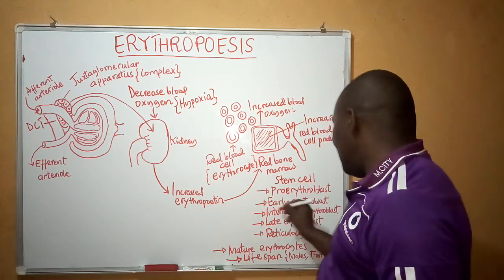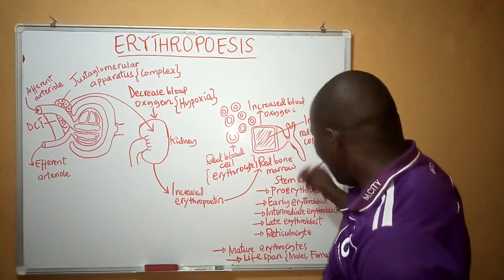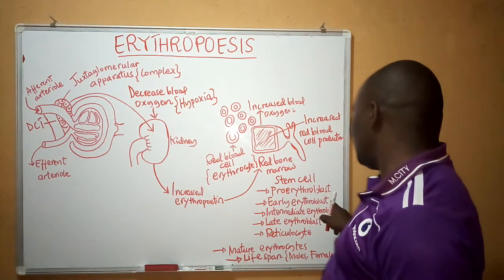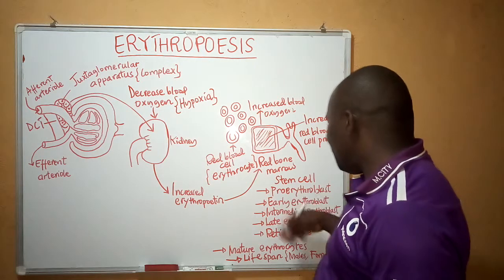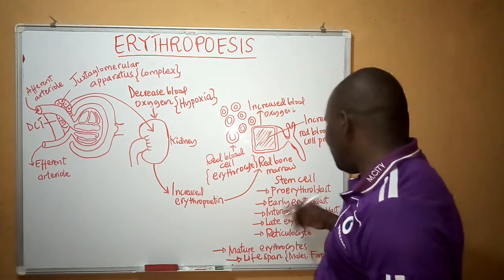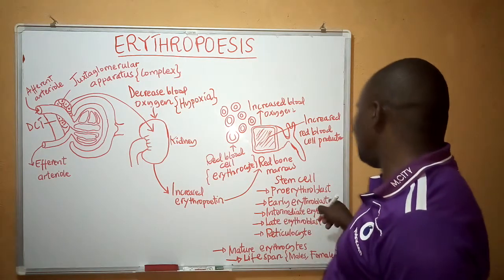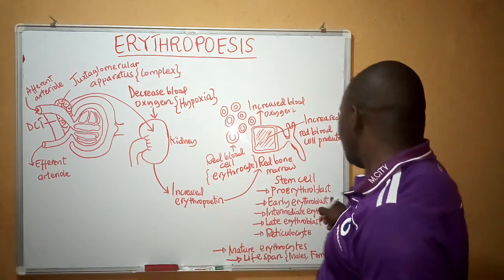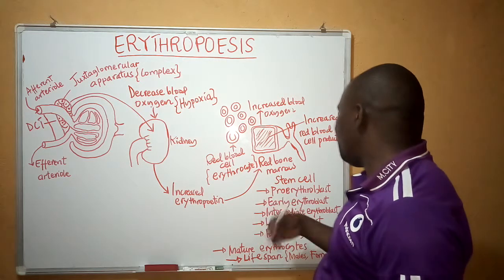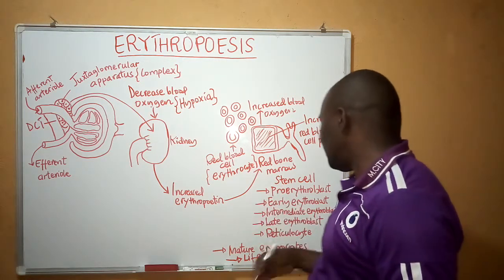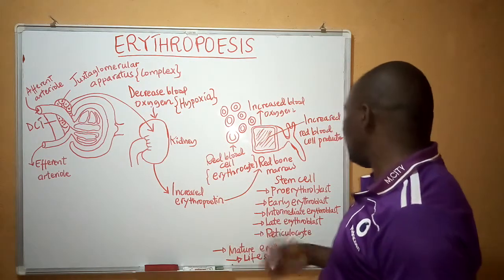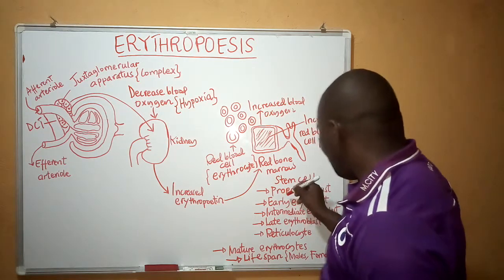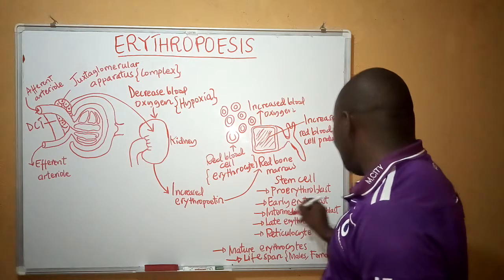At the l-erythroblast stage, the number of ribosomes is going to be increased because there is maximum protein synthesis at this stage. Maximum protein synthesis occurs because a large amount of amino acids are joined to form four polypeptide chains, and each polypeptide chain also associates with heme.